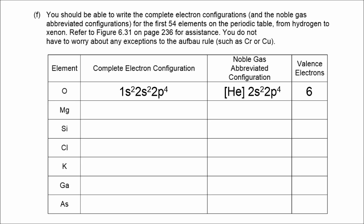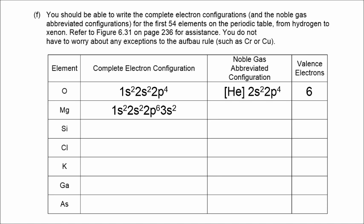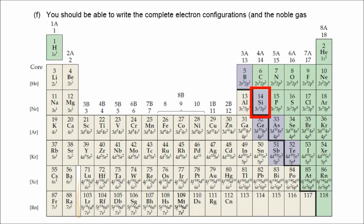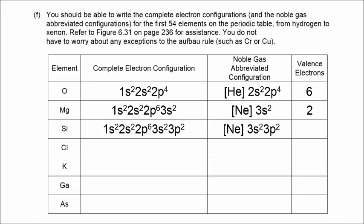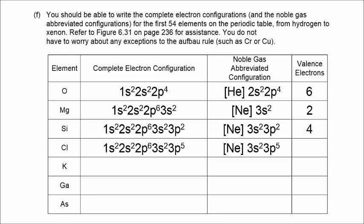Magnesium has 12 total electrons: 1s2, 2s2, 2p6, 3s2. We abbreviate everything up through 2p6 with neon in brackets, giving [Ne] 3s2 — two valence electrons. Silicon has 14 electrons: [Ne] 3s2, 3p2 — four valence electrons. Chlorine has 17 electrons: [Ne] 3s2, 3p5 — seven valence electrons.